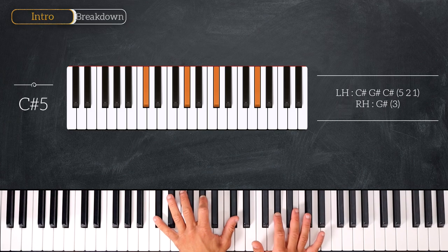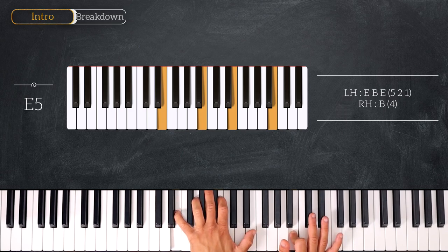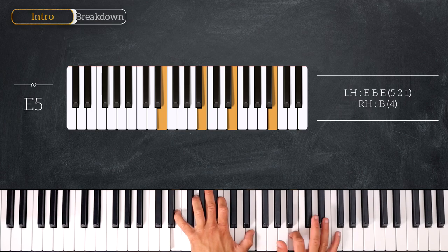We'll then move on to an E5 doing the same. Playing only the fifth. So we have E, B, E on the left and B on the right hand.